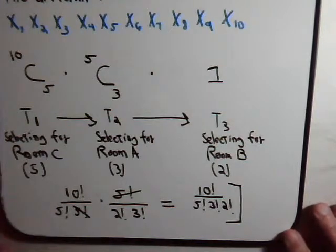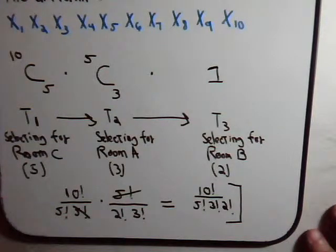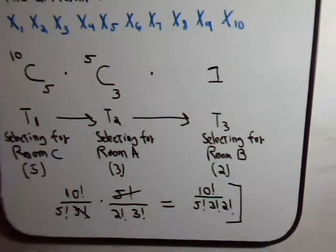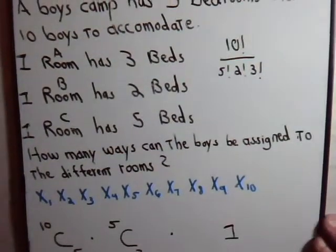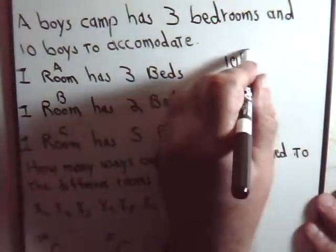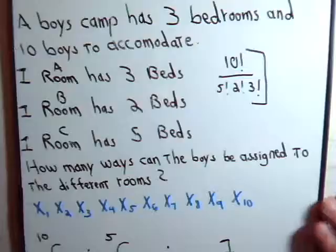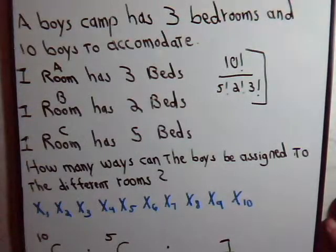And so that's the number of ways, then, that we can select the boys, total number of ways that we can select the lads, the boys, for rooms A, B, and C. That's the total number of different ways we can do that, which is exactly what we have obtained earlier when we use the permutation with repeats approach.